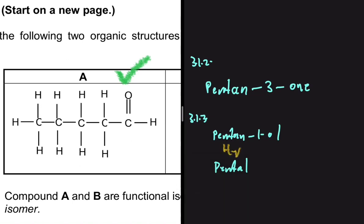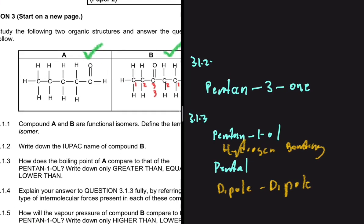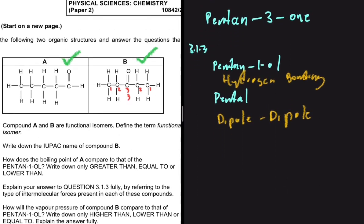We have pentan-1-ol and pentanal. Pentan-1-ol is an alcohol, so it consists of hydrogen bonding. Pentanal is an aldehyde, so it consists of dipole-dipole intermolecular forces. To answer this question you need to know which intermolecular force is generally stronger between hydrogen bonding and dipole-dipole. Compound A will have a lower than boiling point compared to pentan-1-ol.